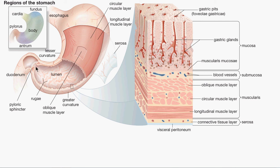From the pyloric antrum there is a small part called the pyloric canal, and the opening is called the pylorus. Generally we call all of this the pyloric region. Food enters the stomach through the esophagus, and here there is the cardiac sphincter — a valve-like structure that prevents food from going back into the esophagus while the stomach is churning food with gastric juice, protecting the esophagus from acidic contents.